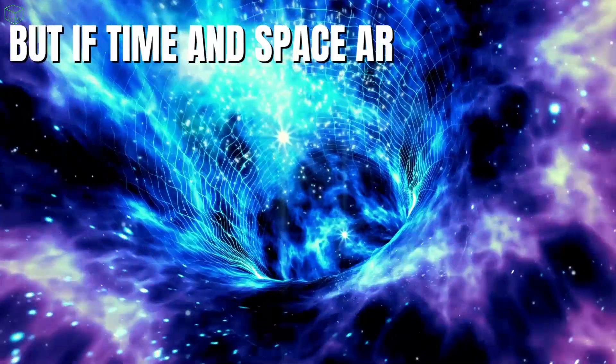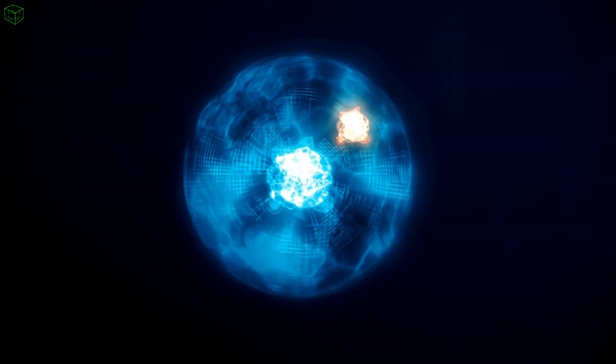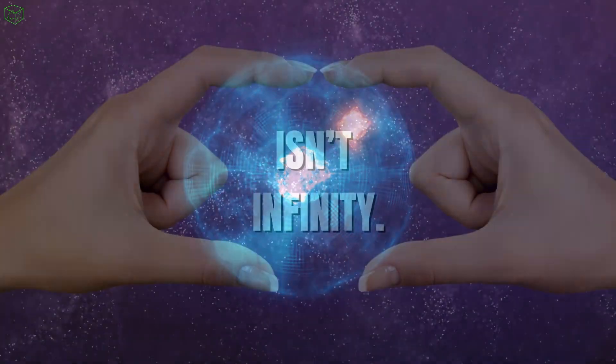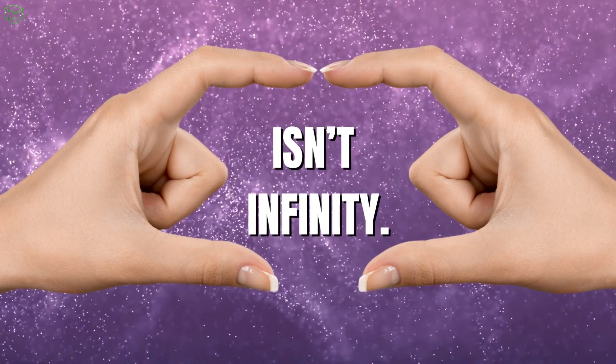But what if that's not the case, and time and space aren't infinite? Who knows? They might be like a grid or pixels on a screen. Perhaps there's a minimum possible size in space in a smaller fraction of time. If that's true, then there's an enormous number of points between two hands, but there isn't infinity.